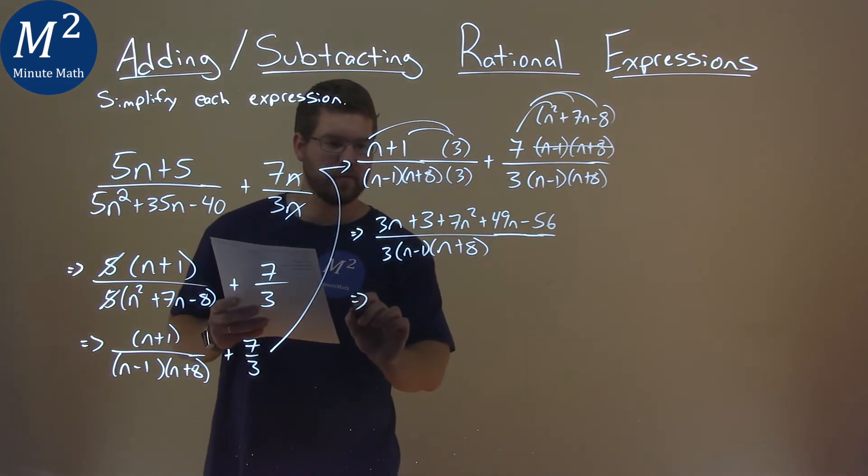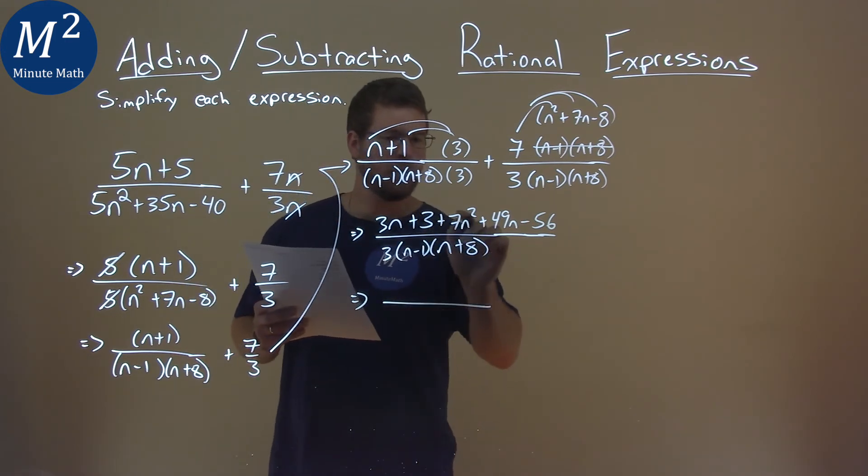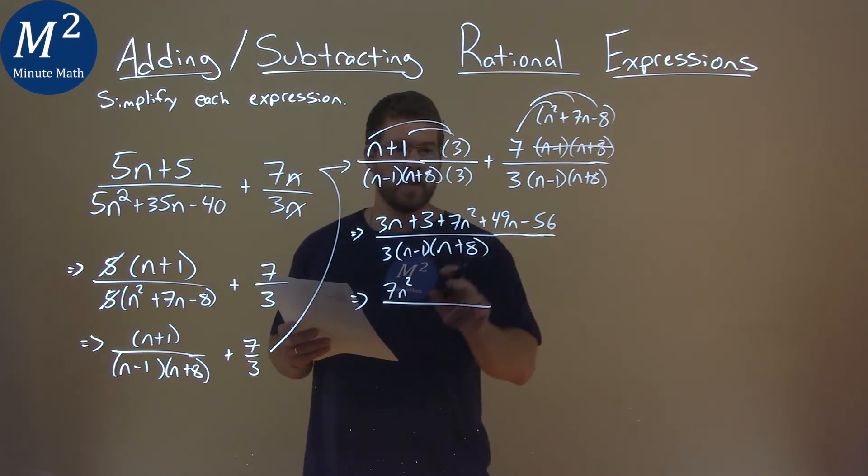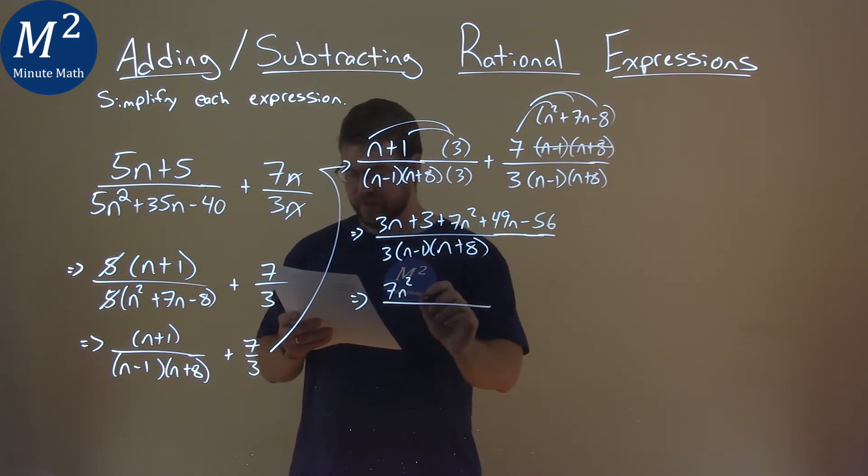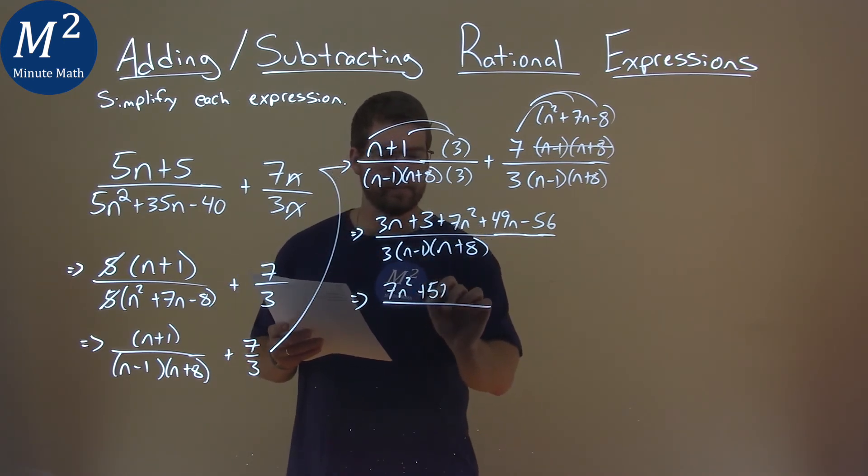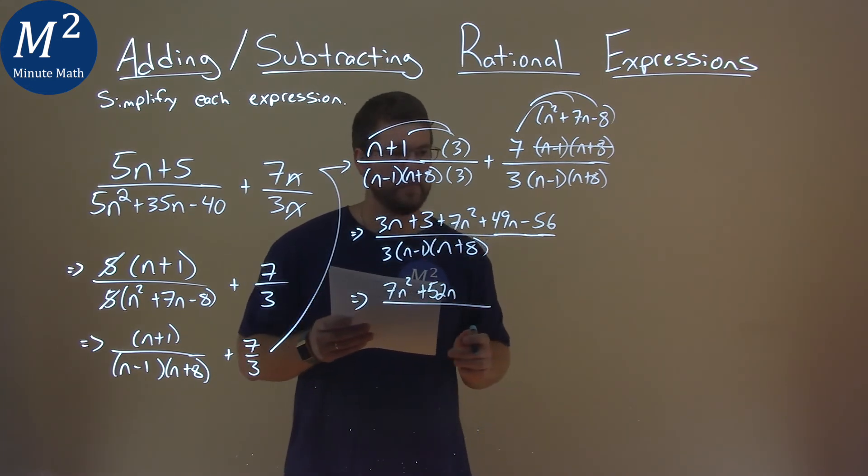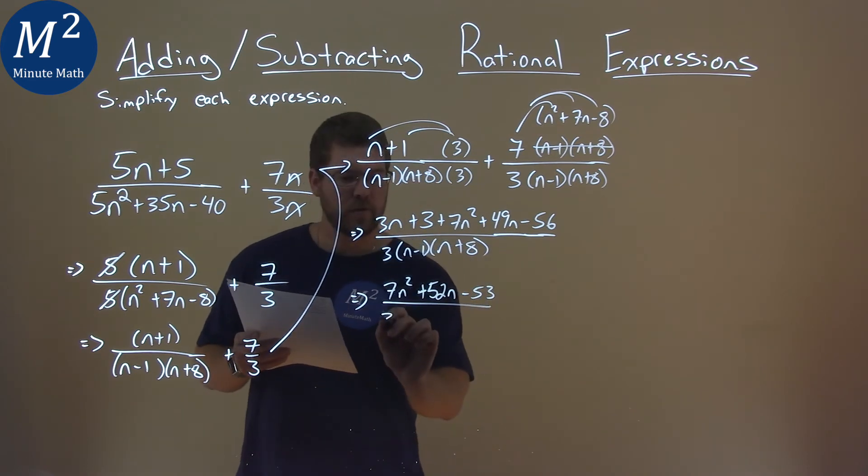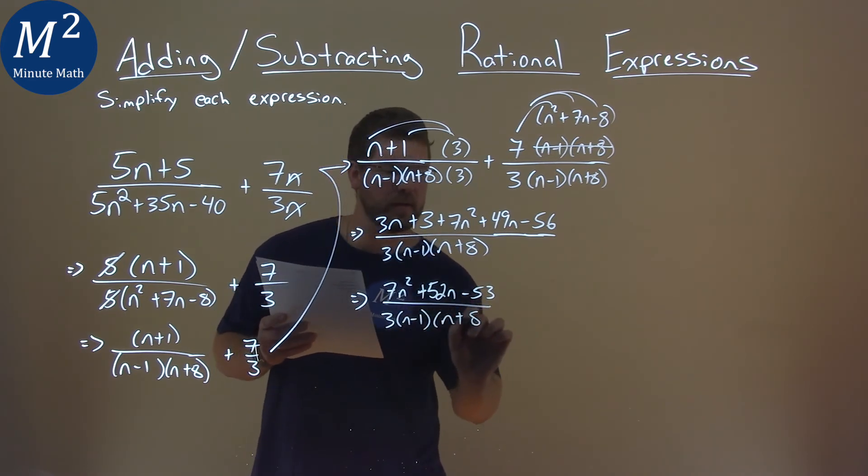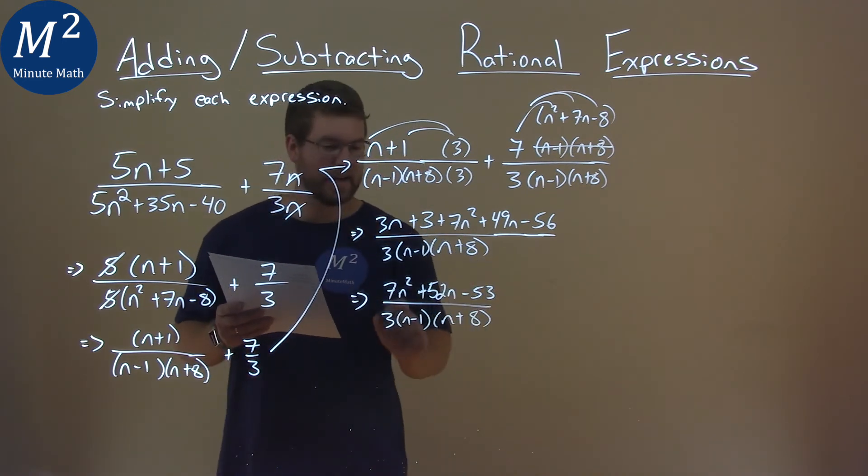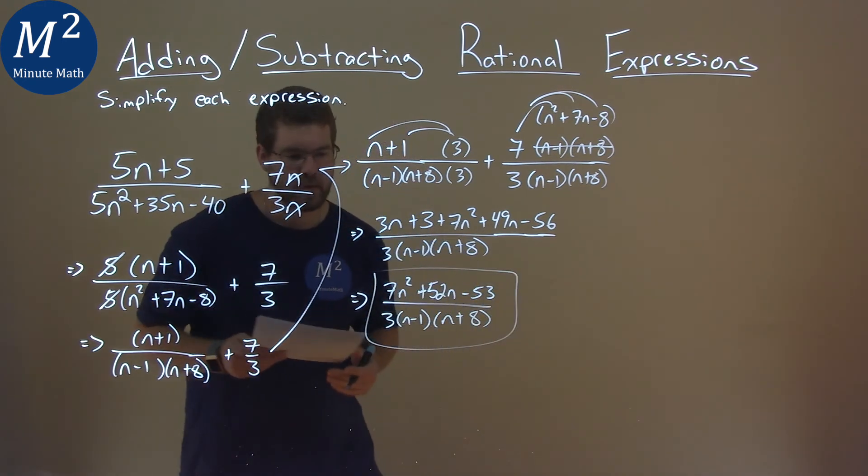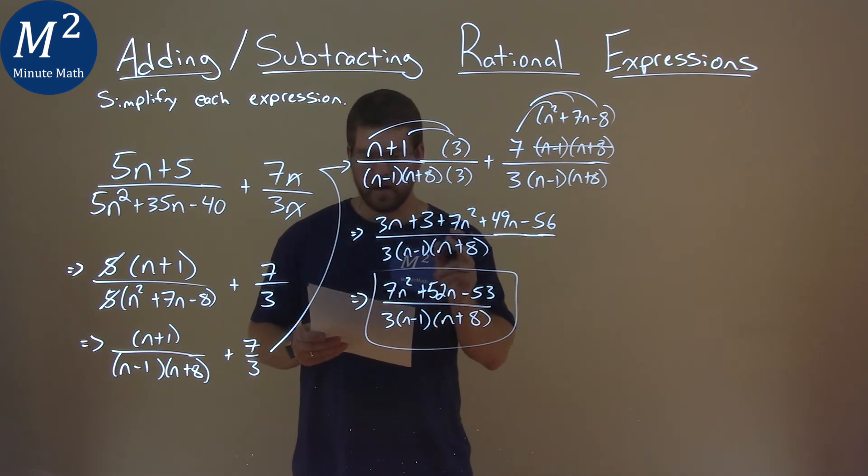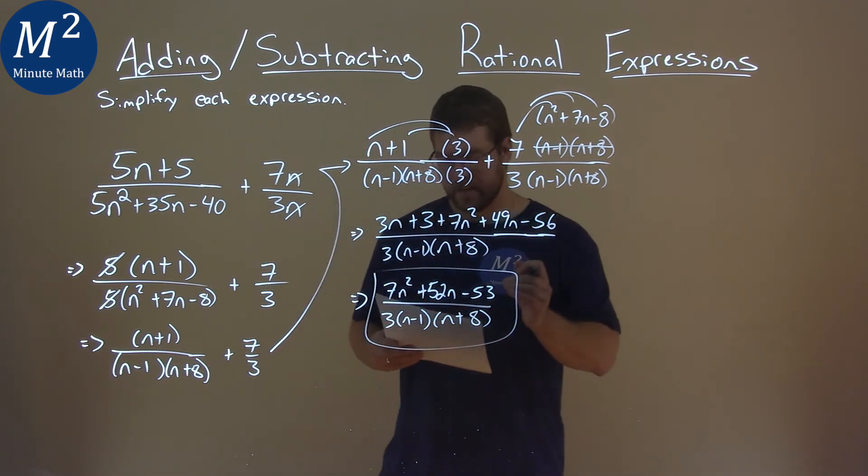So now we want to combine our like terms in the numerator. We only have 1 with a n squared, so we have 7n squared here. We have 49n and a 3n, add to be a 52n. And a 3 minus a 56 is a minus a 53. And that's all over 3 times an n minus 1, n plus 8. And this actually cannot simplify anymore. And so our final answer here is 7n squared plus 52n minus 53 over 3 times n minus 1 times n plus 8.